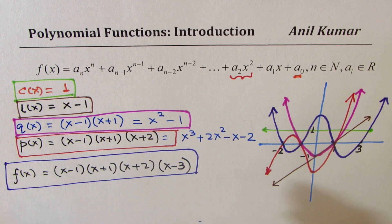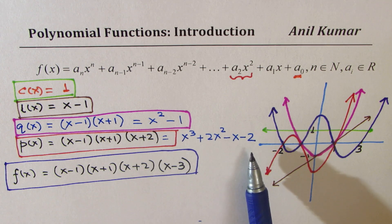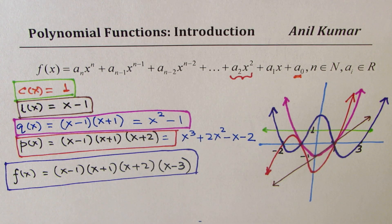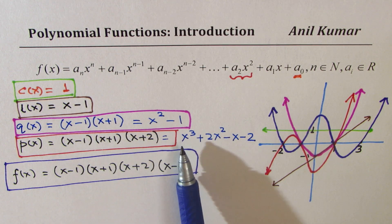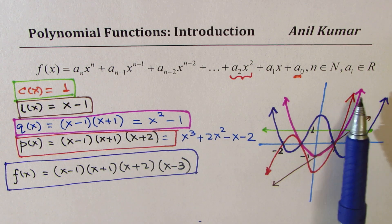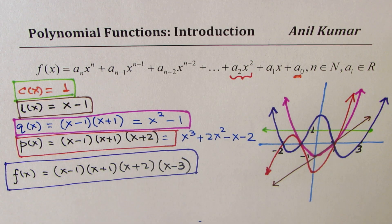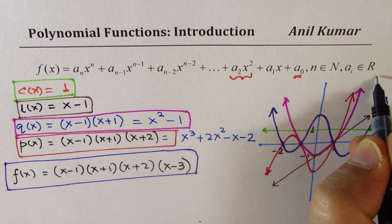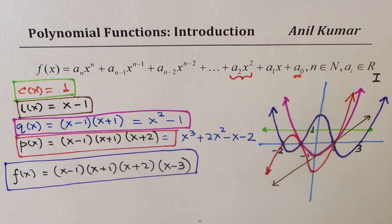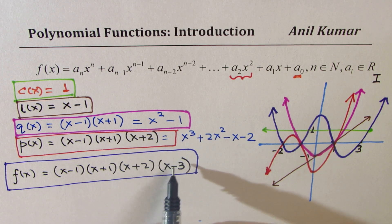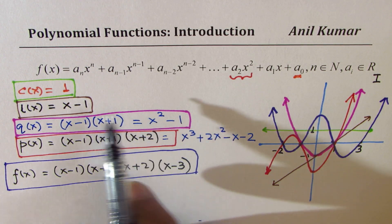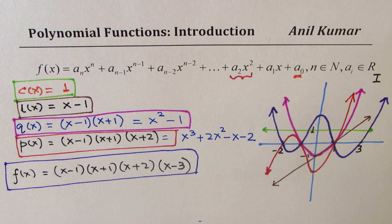What I did was add a factor and increase the degree each time. What you note here is that if I take the leading coefficient as positive, all the graphs end up in quadrant 1. All our graphs are ending up in quadrant 1 for positive values of the leading coefficient — whether it's x, x squared, x cubed, or x to the power of 4. We see a correlation between these factors, the degree, and the graph.